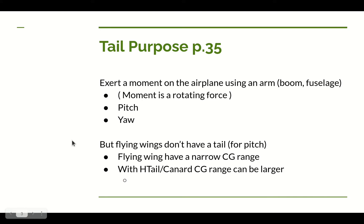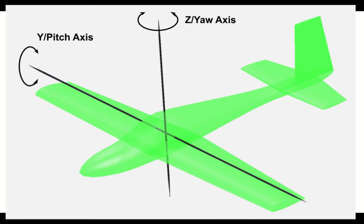Coming up with the tail configuration starts on page 35 of Dan's book. The purpose of the tail is to exert a moment — to rotate the aircraft about one axis or another. In this case it controls two axes: the pitch axis (the y-axis, running left and right through the airplane) and the yaw axis (running vertically through the airplane).